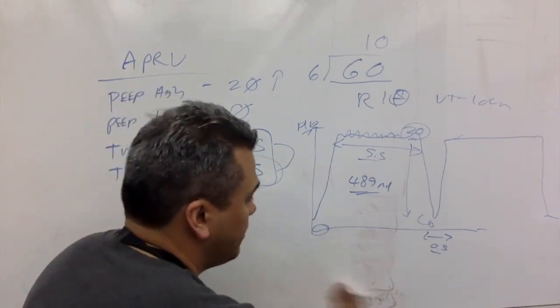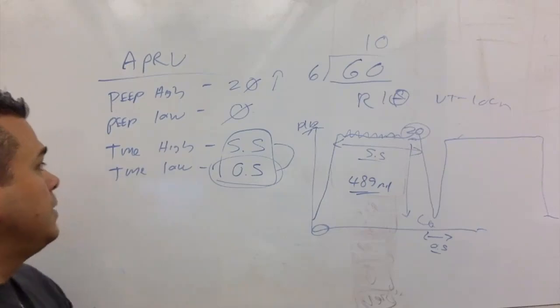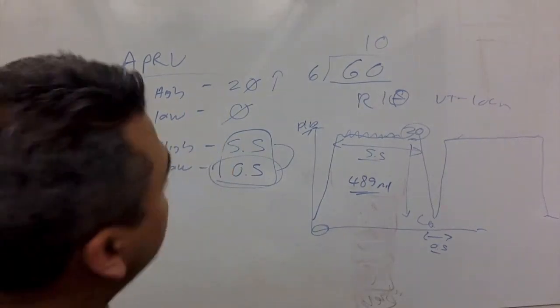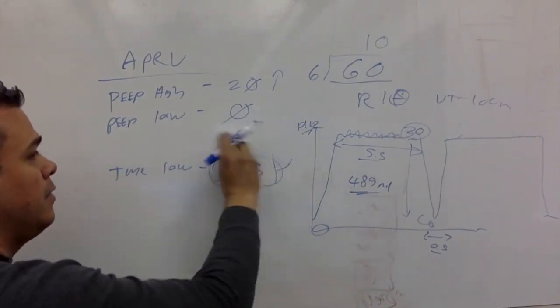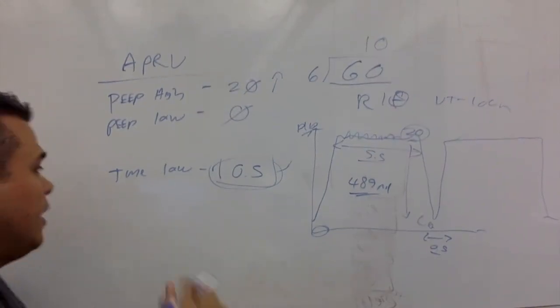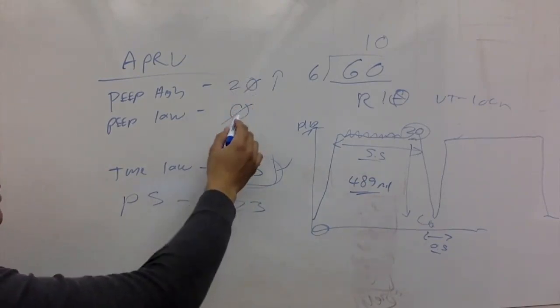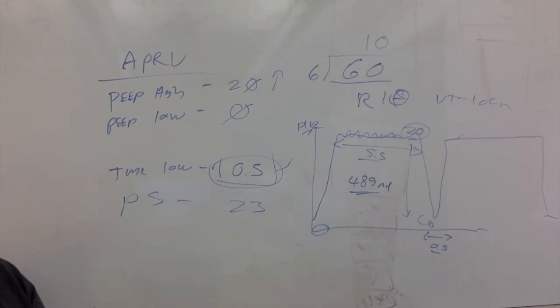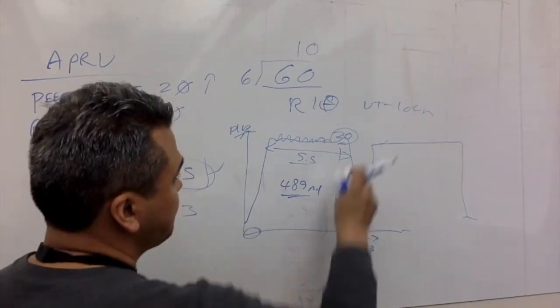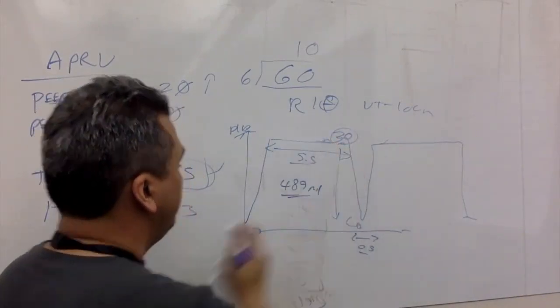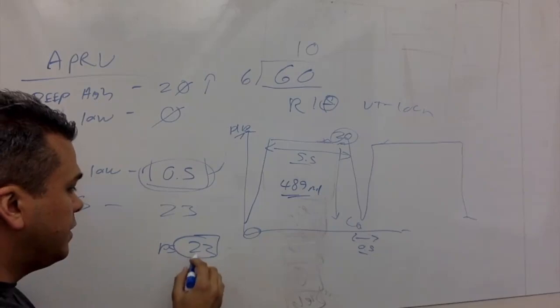Let's talk about something that we're dealing with with the docs ordering pressure support. Sometimes you'll get these settings, and usually you'll get a time low, but you'll also get a pressure support order. You have 20, let's say it's 23. You get this 20 over 0, time low 0.5, pressure support 23. So what does that look like on the graph? Let's say we set our pressure support to 23 on the Puritan Bennett. You'll see this box, 23 pressure support. You'll see it's above PEEP.